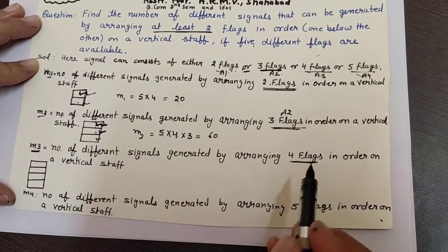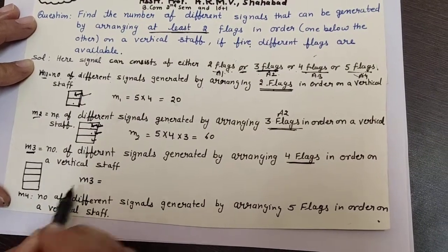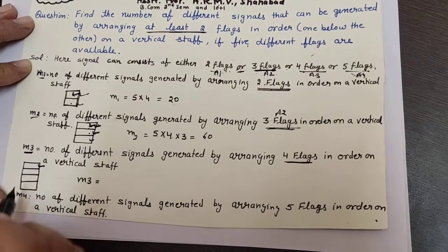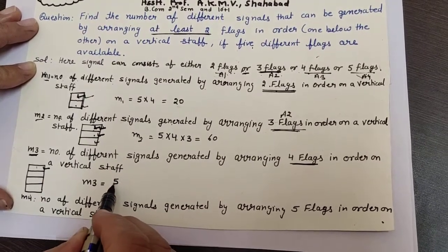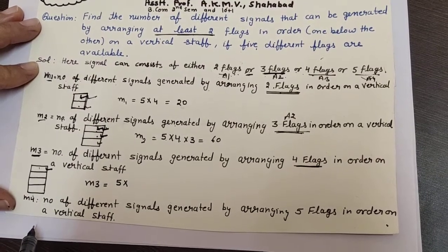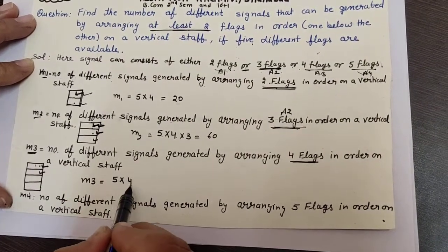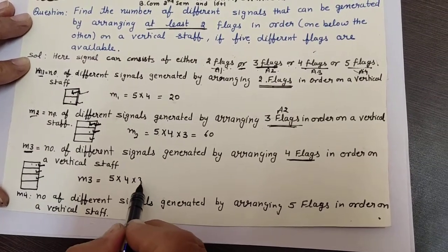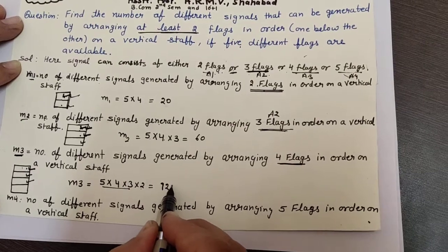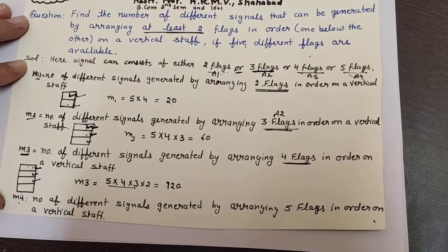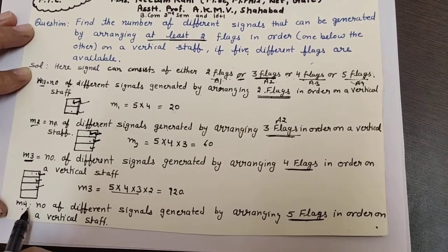M3 is the number of different signals generated by arranging four flags from the five available. There are four vertical positions. The first can be filled in five ways, the second in four ways, the third in three ways, and the fourth in two ways. So M3 = 5 × 4 × 3 × 2 = 120.